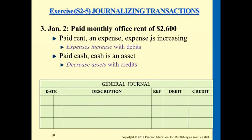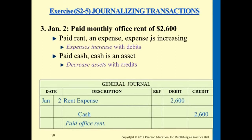The next one, January 2nd: the company paid off monthly office rent of $2,600. So what are the two accounts affected? We'll credit cash and debit rent expense. Rent expense increase is recorded on the debit side, so we'll be capturing rent expense on the debit side of the journal entry. Since we're paying out cash, that reduces cash, so we're recording cash on the credit side. The dollar amount for both is $2,600. This represents paying office rent on this date.